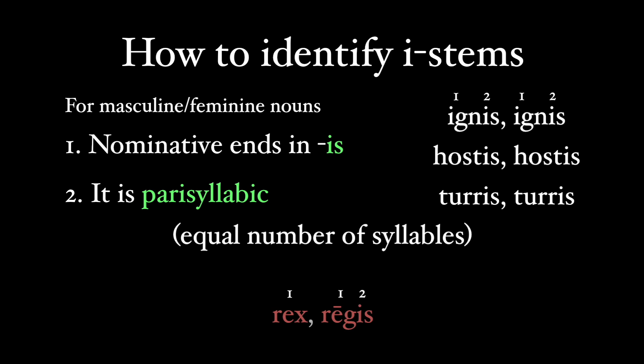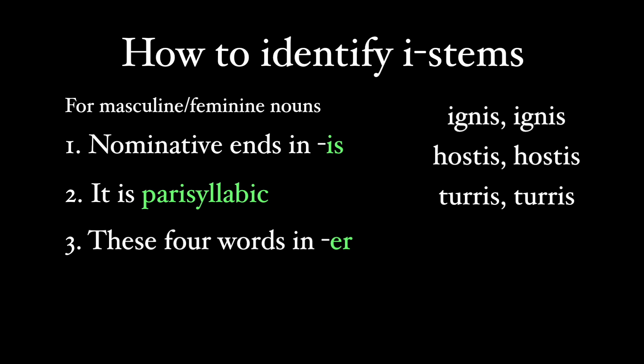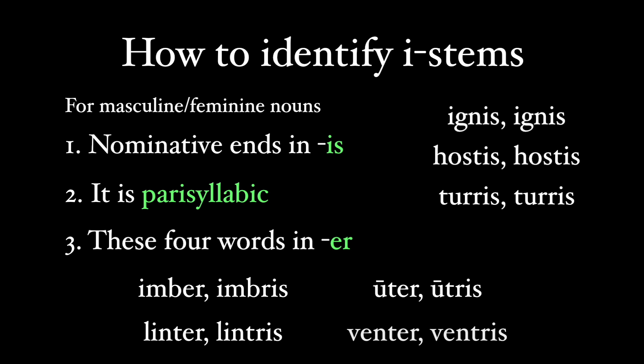Now there is reiks, and there are four words that end in an e-r in the nominative that are also I-stems. So here they are: imber, linter, uter, and venter.